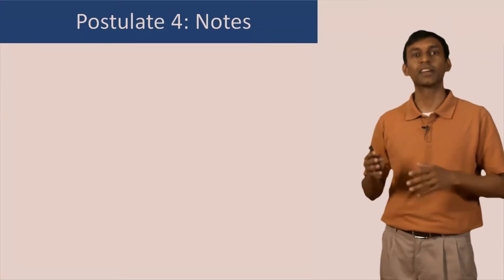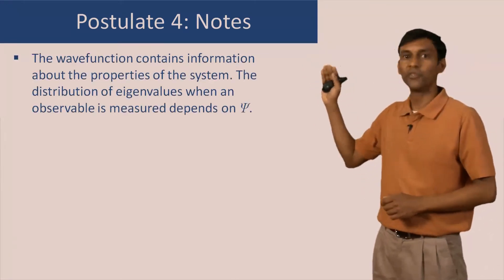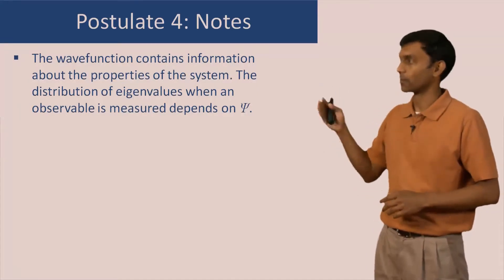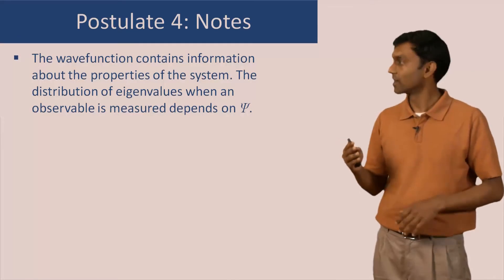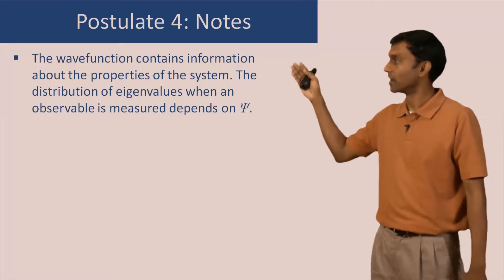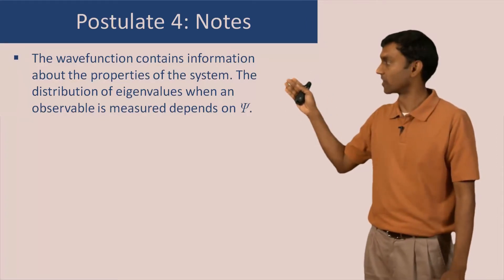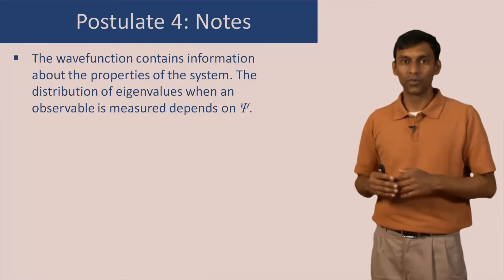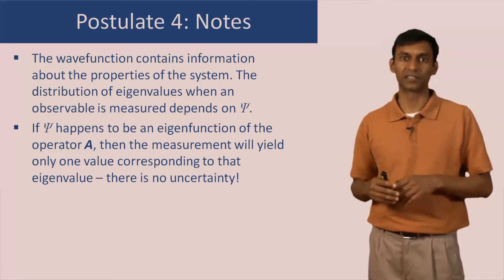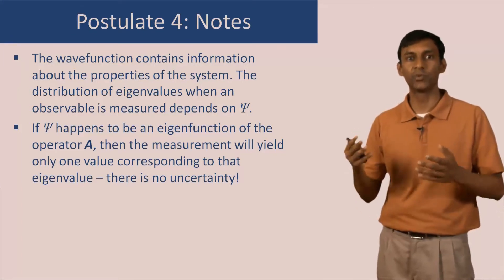There are a few points to note in the context of postulate 4. First, the wave function contains all information about the properties of the system, and this postulate tells us how to obtain those properties. The values obtained in a measurement are eigenvalues of the operator corresponding to the property being measured, and we now know how to get a completely definitive distribution of those eigenvalues, which depends on the wave function psi. Second, suppose the wave function psi happens to be an eigenfunction of the operator A — normally it is some linear combination — but if it is an eigenfunction, you only get one eigenvalue in the measurement.